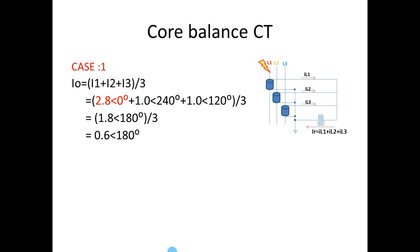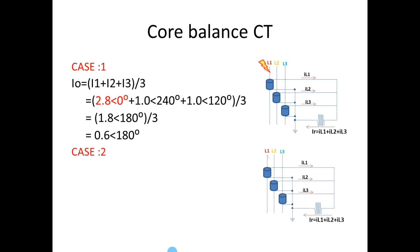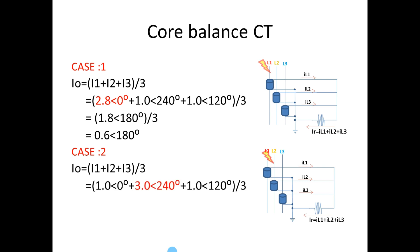For Case 2, considering the fault on Y phase, the Y phase fault current is 3A. The I0 current we get is 0.7A at 300 degrees or minus 60 degrees. We will note down this value.